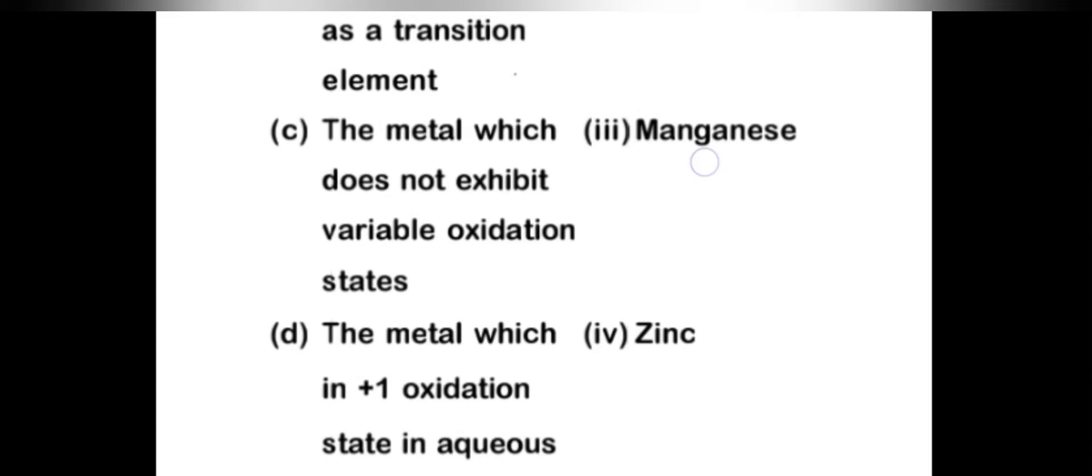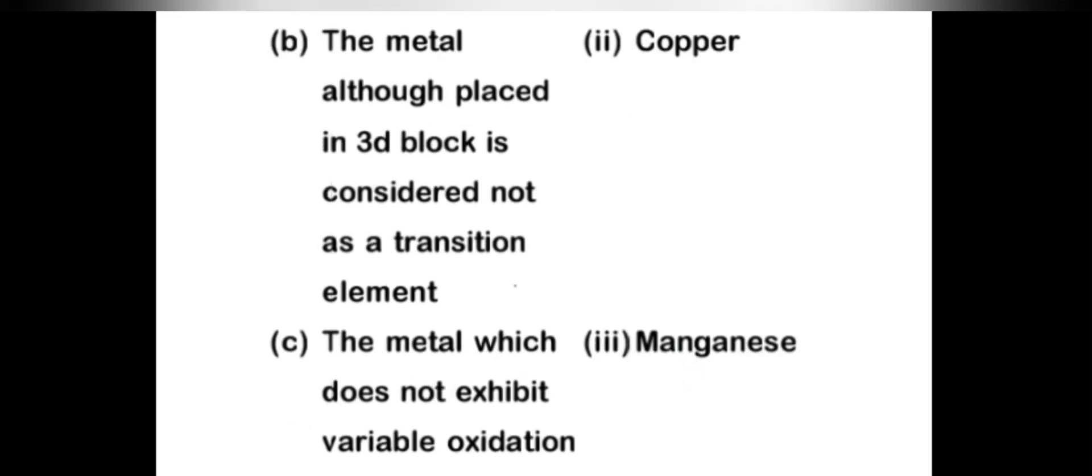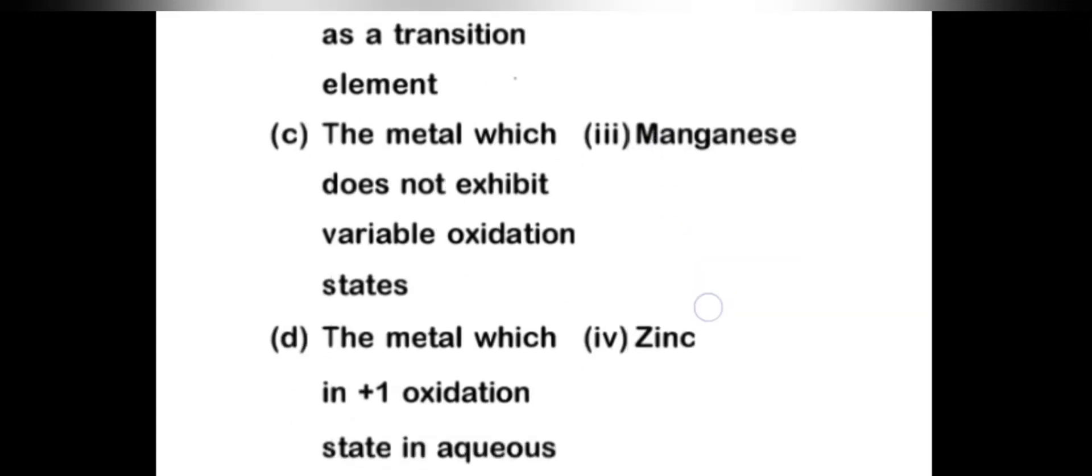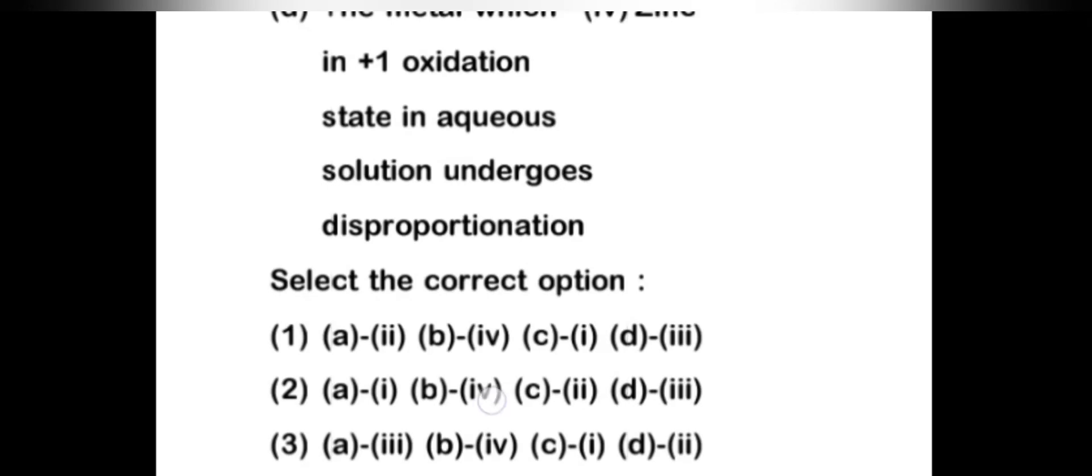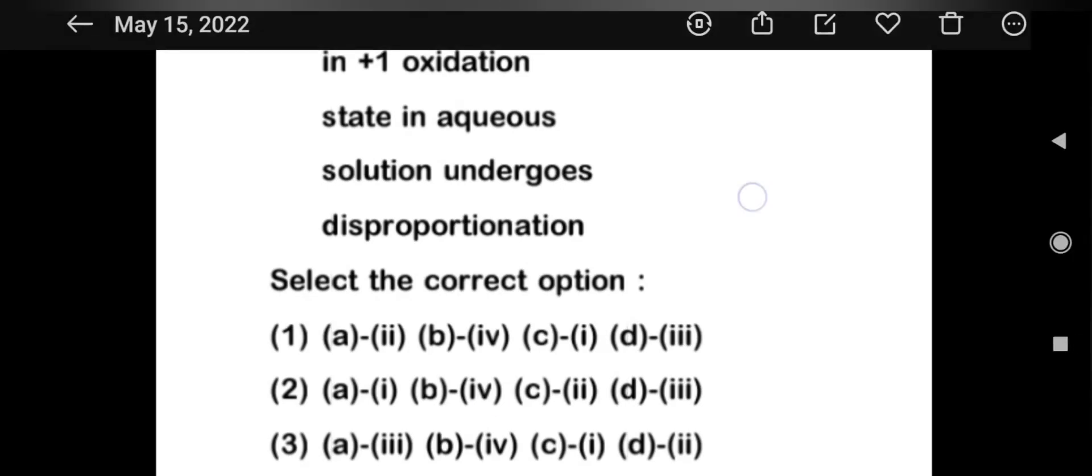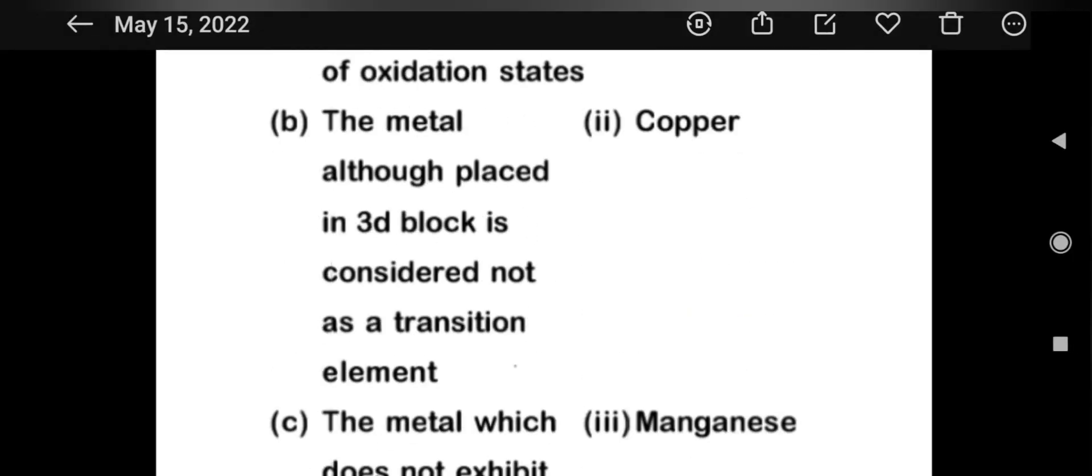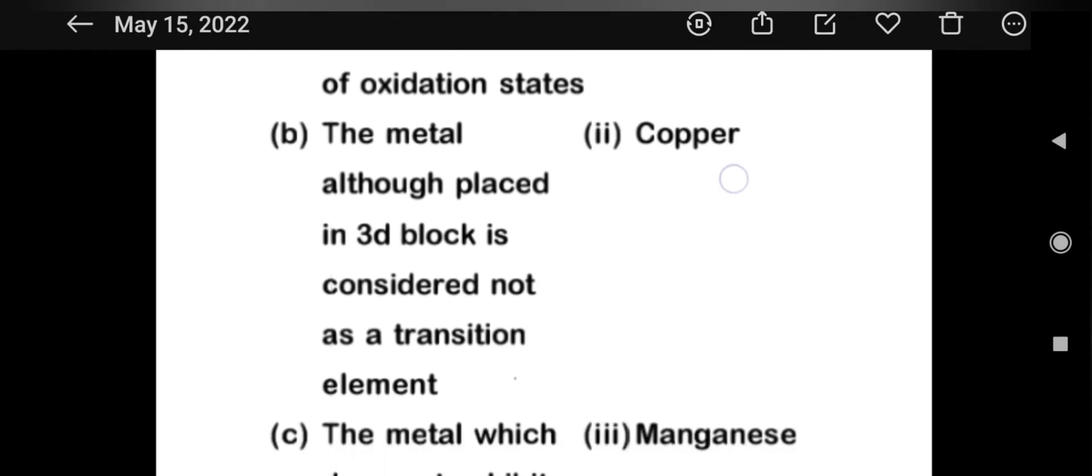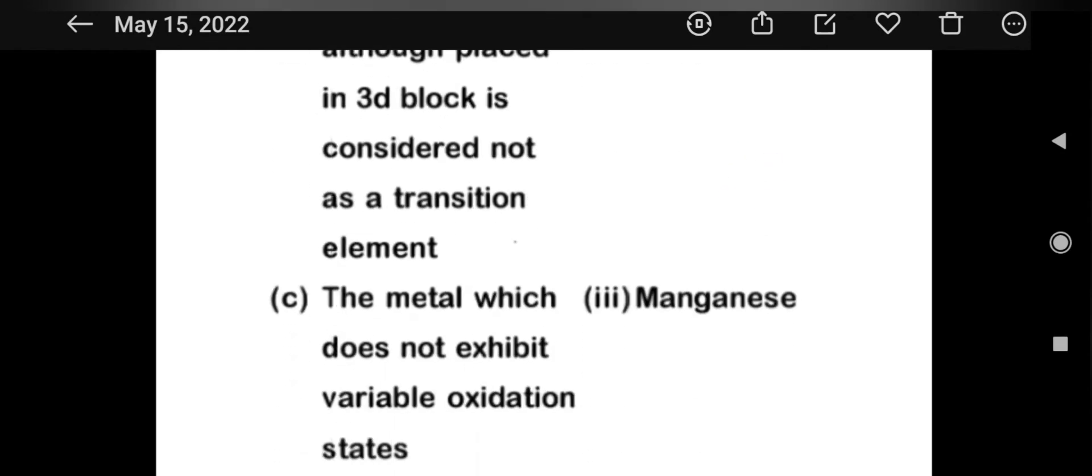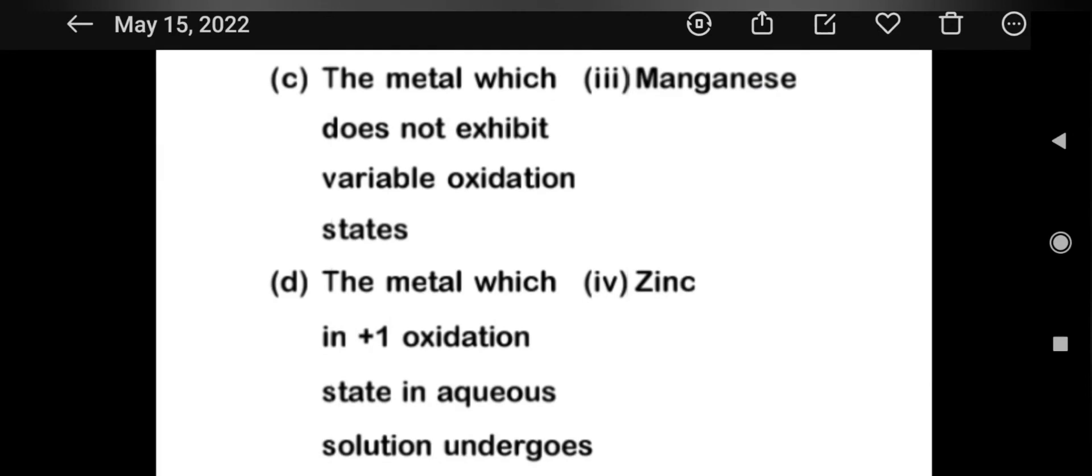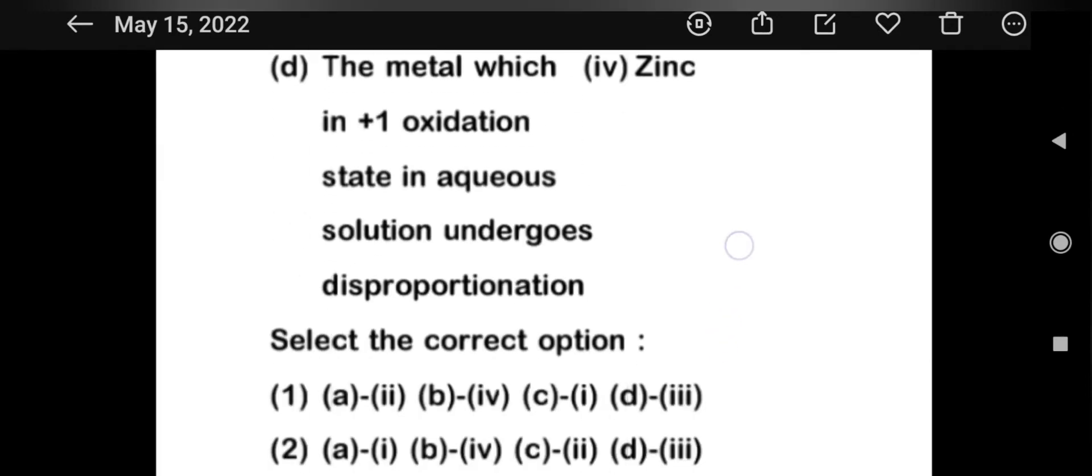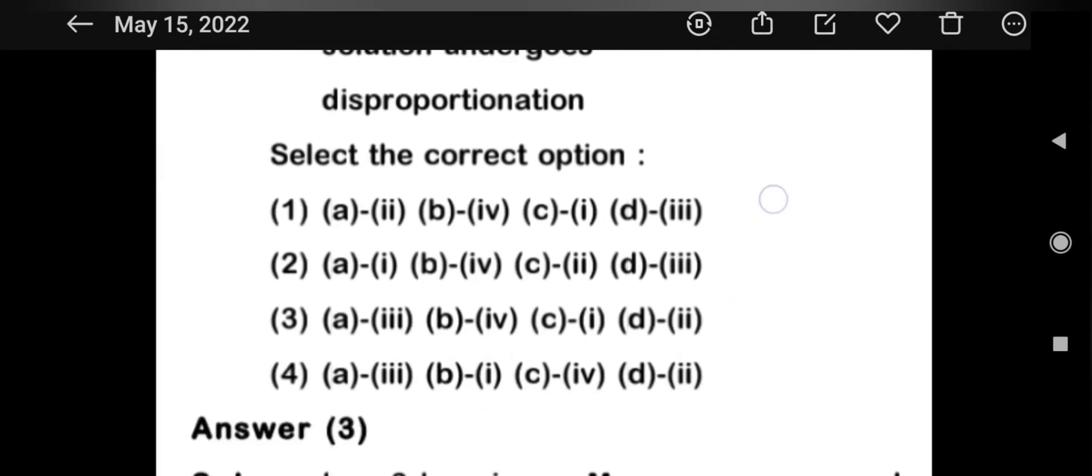B means the metal which is in 3d is zinc, that means fourth. C means second, which is copper, does not show variable oxidation state. And d means it undergoes disproportionation in aqueous solution showing plus one oxidation state.